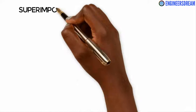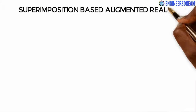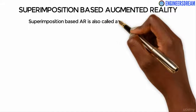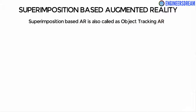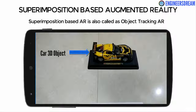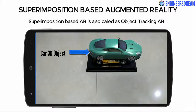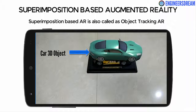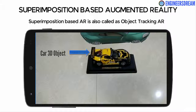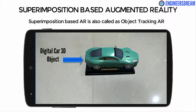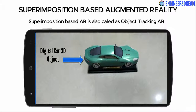The fourth type of augmented reality is superimposition based augmented reality, also called object tracking augmented reality. In superimposition based augmented reality, we replace the original view of an object with a new augmented view. For example, projecting a car 3D model on top of an actual car object.